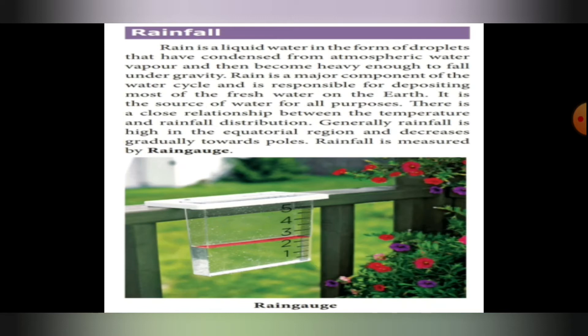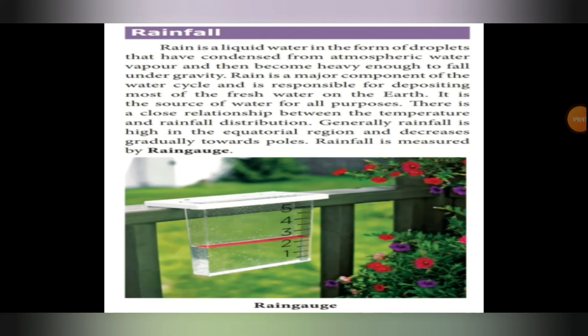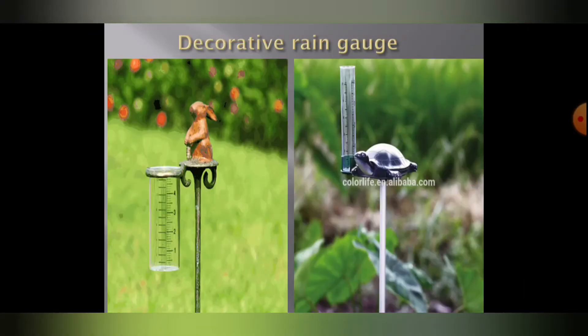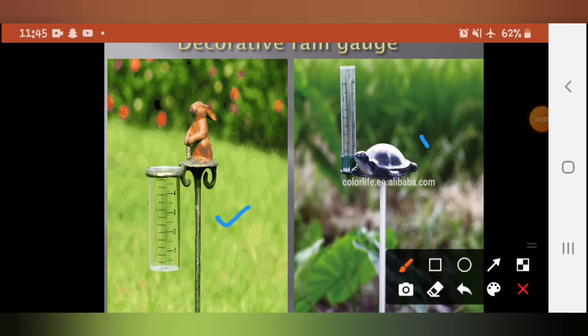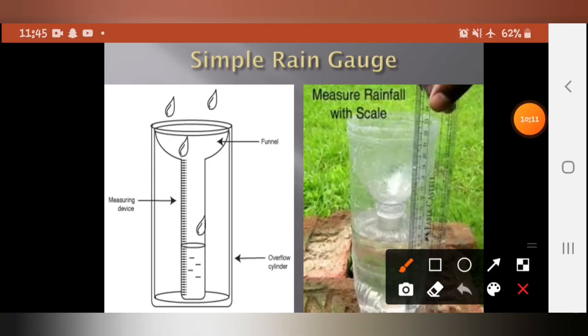There is a close relationship between temperature and rainfall distribution. Generally, rainfall is high in the equatorial region — the center part of the earth — and decreases gradually towards the polar regions. Rainfall is measured by a rain gauge. The picture shown in your book is a decorative rain gauge, while a simple rain gauge can be made at home using a water bottle and measures rainfall with a scale.